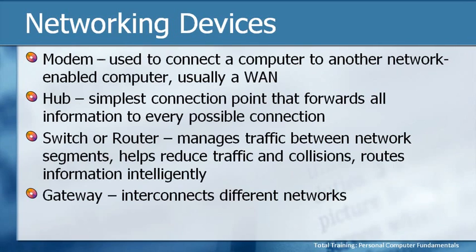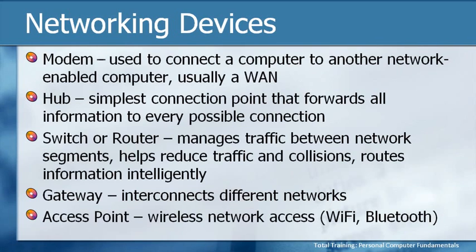Just a couple more things you might hear. One is called a gateway — simply a mechanism to interconnect different types of networks. This may be important, for example, if you want to send an email to somebody using a Mac or Apple platform, because they might be speaking slightly different languages. And lastly, one that people are becoming very familiar with these days is something called an access point — specifically, a wireless access point, or WAP. This allows you to connect to a wireless network using Wi-Fi or Bluetooth. You might go down to a coffee shop with your wireless laptop, use their access point, and connect to the internet.